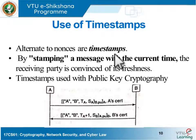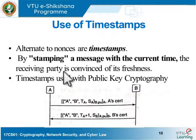An alternate to nonces is the use of timestamps. Timestamping a message with the current time indicates when the message was generated and sent to the other communicating party. Like nonces, timestamps are also able to convey freshness. Timestamps are used with public key cryptography.